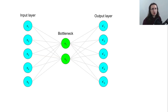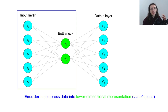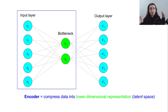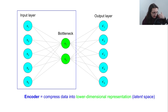The two parts are called an encoder and a decoder. The encoder's role is to compress data into a lower-dimensional representation — we take in the data as input, then learn weights so that we can compress it down. This lower-dimensional representation is often called a latent space, which is a representation of the original data that focuses only on the most important attributes or features.